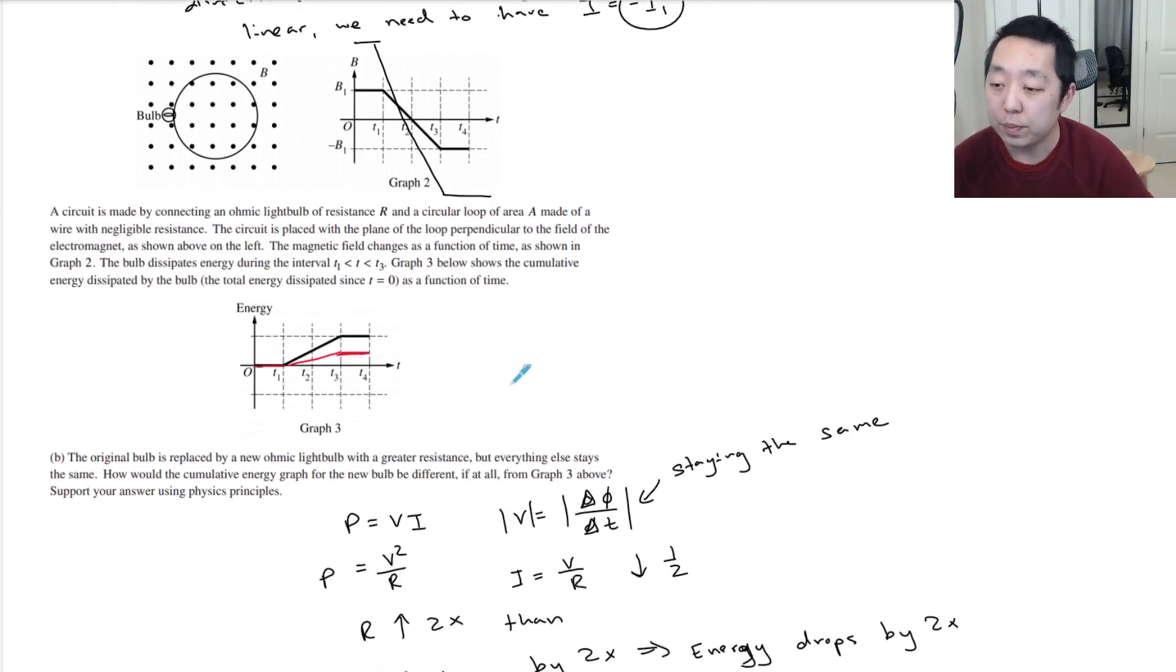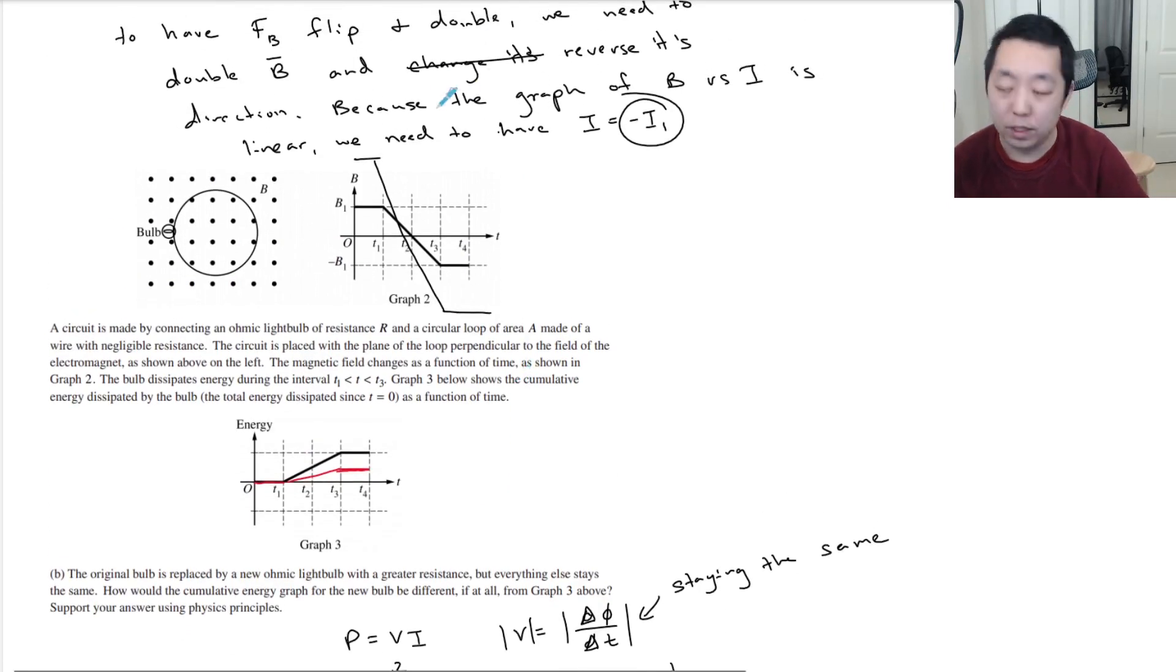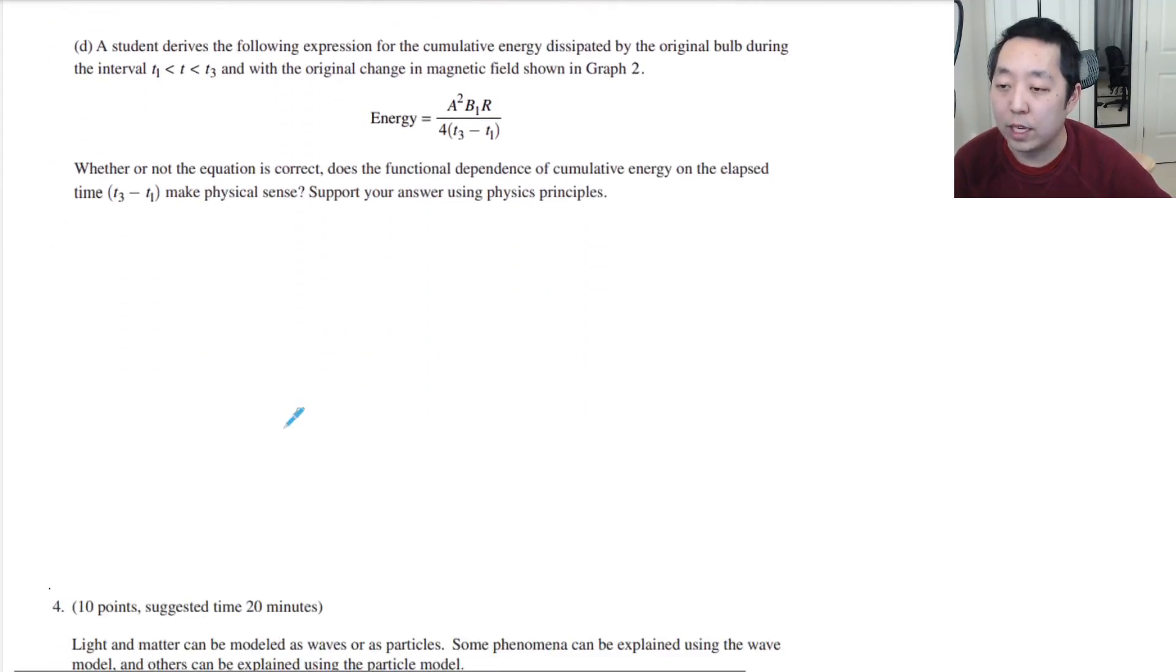I'm collapsing the time that the magnetic field is changing, so the magnetic field changes even faster than before. The voltage is related to the change in flux divided by the change in time, which is the change in the magnetic field times the area. The area is constant. This rate is now higher because we're doing the same change in the magnetic field in a shorter amount of time, so V has a dependency that's one over time, one over t3 minus t1.